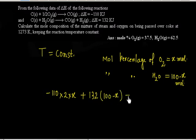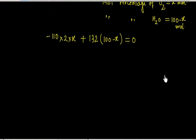Now the total heat released equals total heat gained, so this equals 0. So I will have minus 220X plus 13200 minus 132X equals 0.